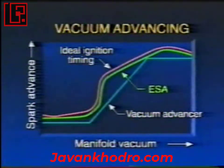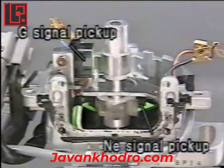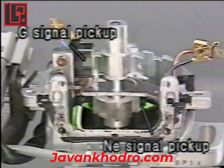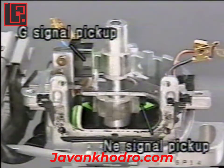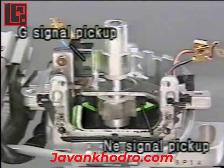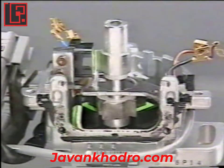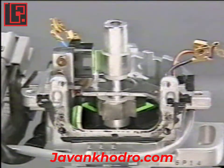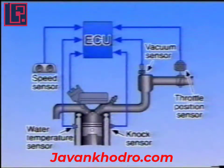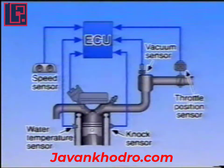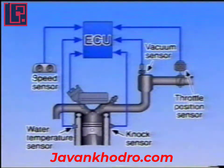In ESA, the distributor has two integrated pickup coils, one of which generates an engine speed, or NE signal, and the other of which generates a crank angle reference position, or G signal. While the engine is running, these signals are continually transmitted to the ECU. In the case of the D-type EFI engine, other sensors are provided for the ECU, such as the vacuum sensor, throttle position sensor, knock sensor, water temperature sensor, and vehicle speed sensor.